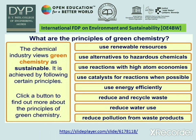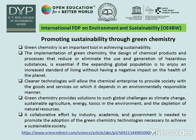In the previous two videos, I discussed catalysis. Now we will discuss the principles of green chemistry. These principles include: use of renewable energy sources; use of alternatives to hazardous chemicals; use of reactions with high atom economies; use of catalysts for reactions when possible; use energy efficiently; reduce and recycle waste; reduce waste use; and reduce pollution from waste products. If we follow these principles, we can maintain the environment and its sustainability.